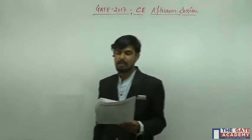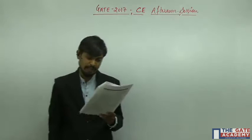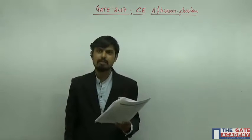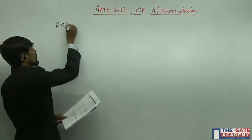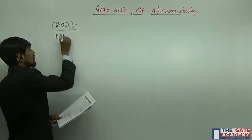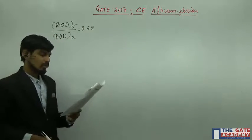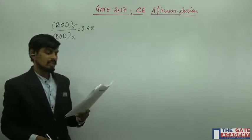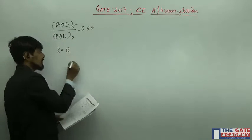For a given water sample, the ratio between BOD5 at 20 degree centigrade and ultimate BOD is 0.68. That is, BOD5 divided by ultimate BOD is equal to 0.68. The value of the reaction rate constant k to the base e is what?